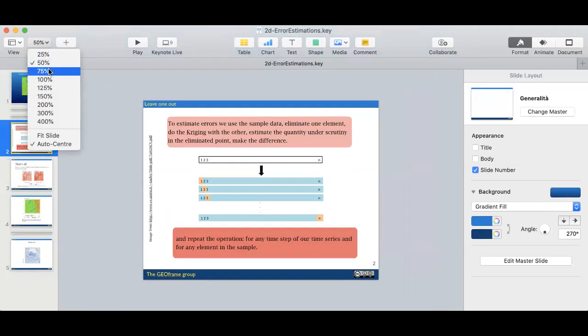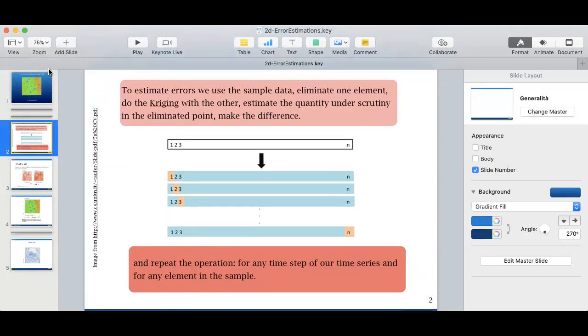To estimate the error, we assume that we have one, two, three, n data sets. First, we exclude the first and do the kriging on the other n minus one. Then we exclude the second, and the third, and then the nth data set.